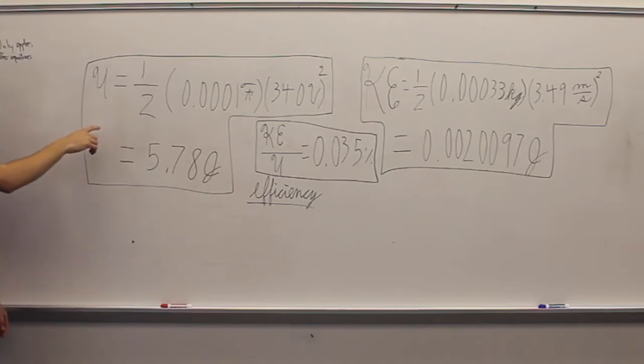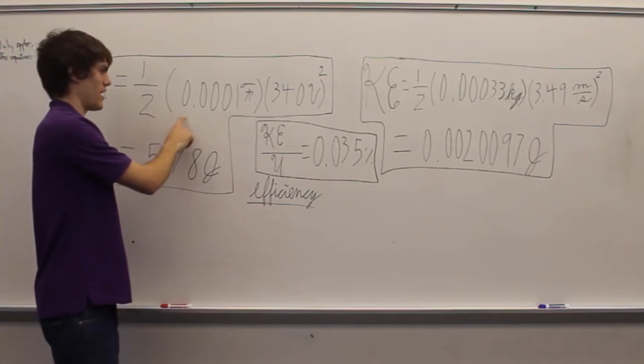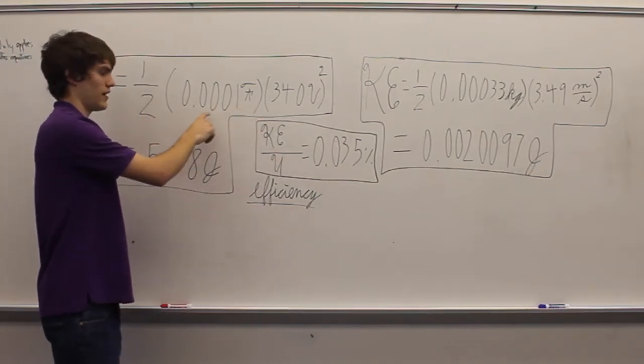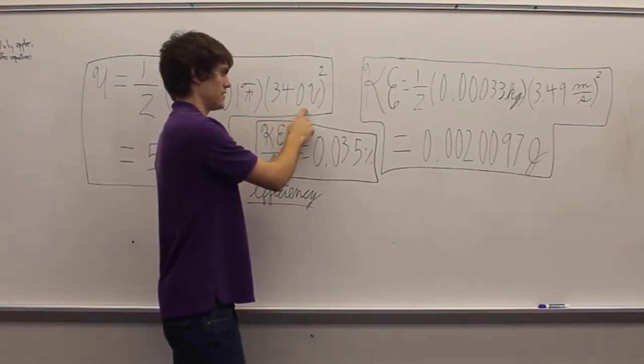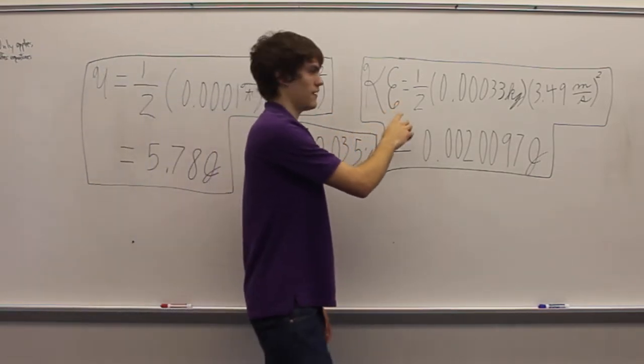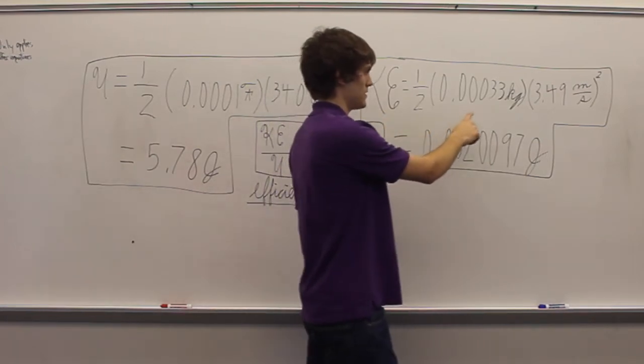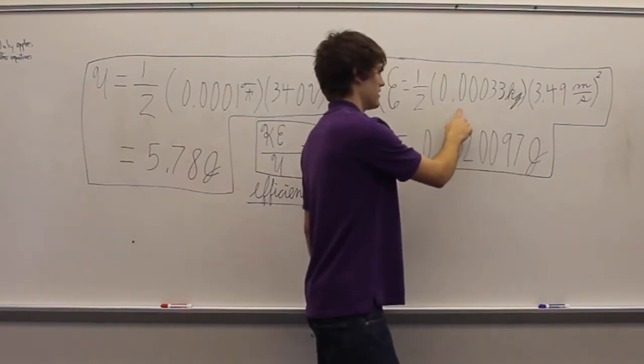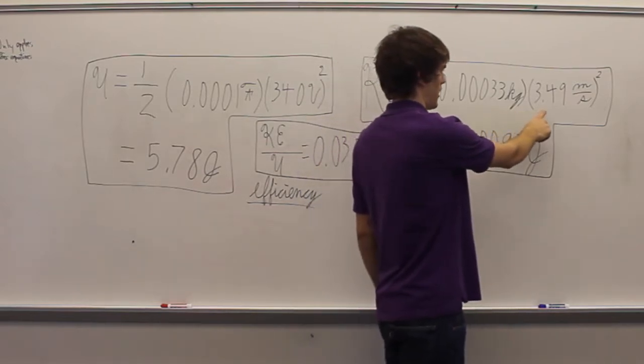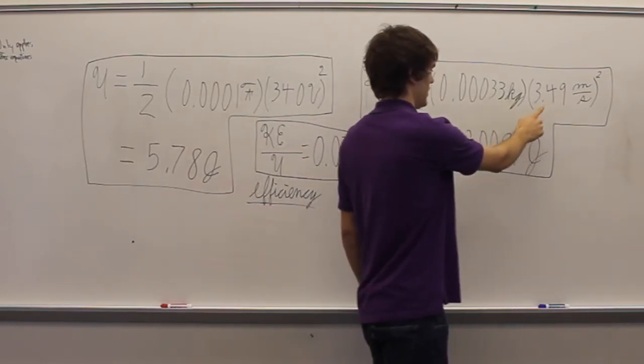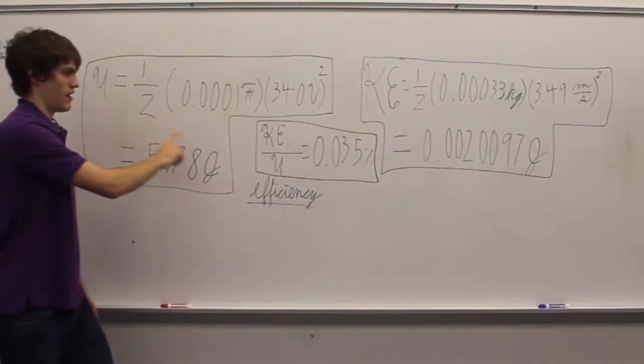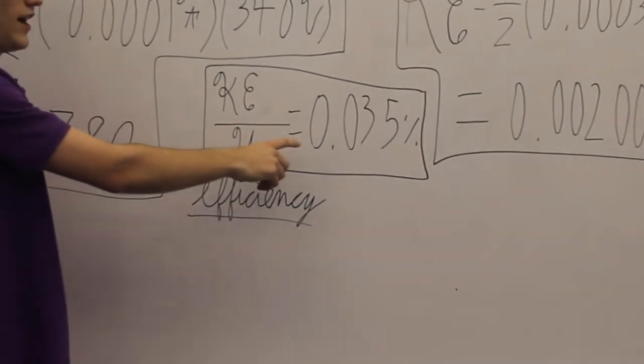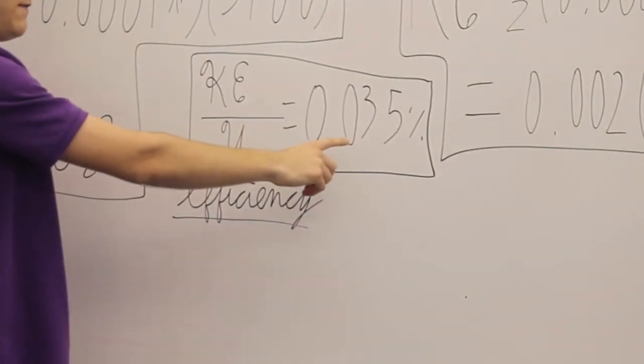To calculate the efficiency of our coil gun, we computed the potential energy of the capacitor as one-half CV squared with a 100 microfarad capacitor and a 340 volt potential difference, and the kinetic energy of the projectile as one-half MV squared with a 33-gram projectile and 3.49 meters per second velocity. The efficiency was the KE divided by the U times 100, and that gave us 0.035% efficiency.